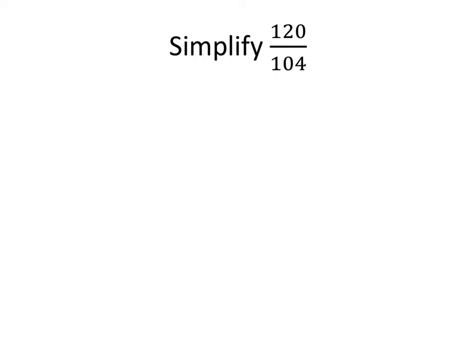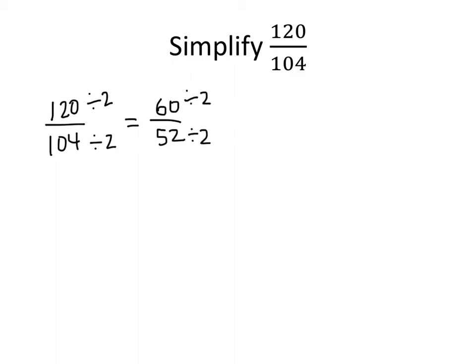Now you might notice that the top and the bottom of this fraction are both even, and so what I could do is take my 120 over 104 and divide top and bottom by 2. Just like I can multiply the top and bottom of a fraction by the same number, I can divide the top and bottom by the same number. When I do that, 120 divided by 2 is 60, and 104 divided by 2 is 52. Top and bottom are still even, so we can divide by 2 again — 60 divided by 2 is 30, 52 divided by 2 is 26. We divide by 2 again and we get 15 over 13. And we've simplified our fraction.